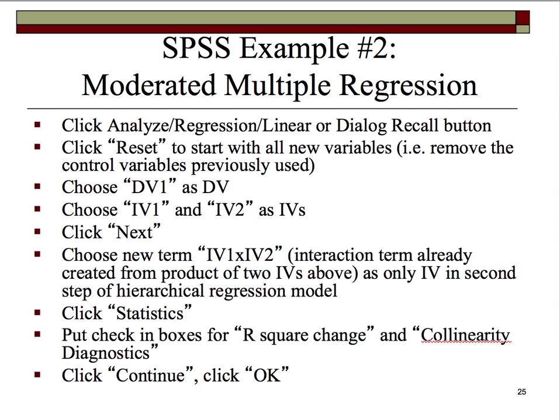Since we've clicked Reset, we'll have to go back in and click Statistics and also put a checkbox in R-squared change, because we want to know the change from block one to block two. Block two has the interaction term, and we want to know if that interaction term explains a significant incremental variance in the outcome variable. We'll also put a checkbox in for collinearity diagnostics, then click Continue and OK.